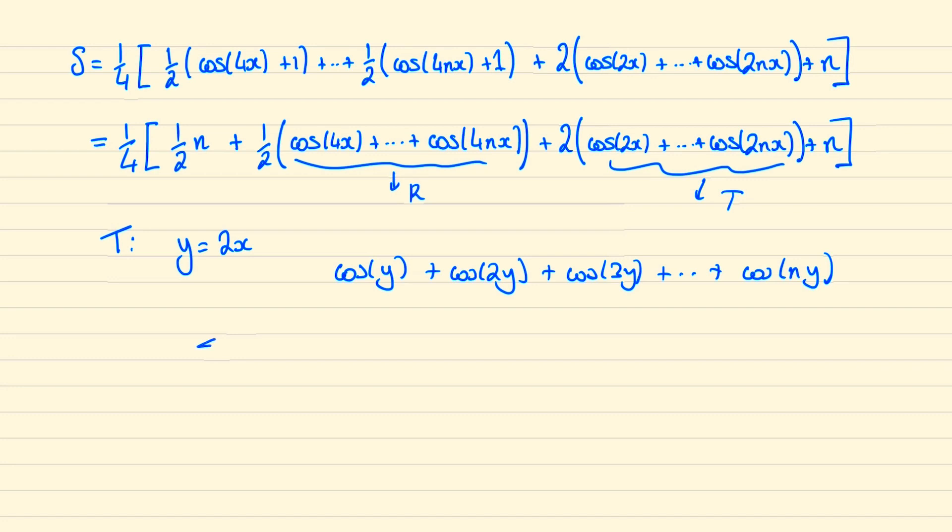And this is the sum of cos ky from 1 to n, which has a nice form to be sine of ny over 2 over sine y over 2 times cos of n plus 1 over 2y.